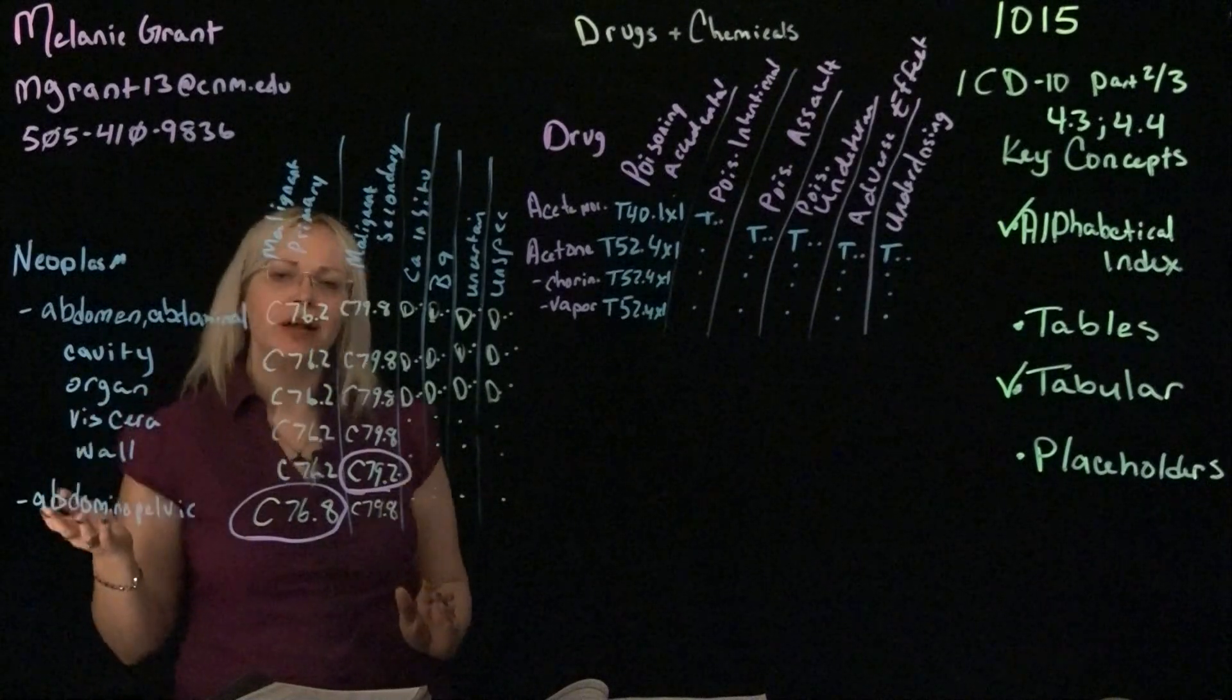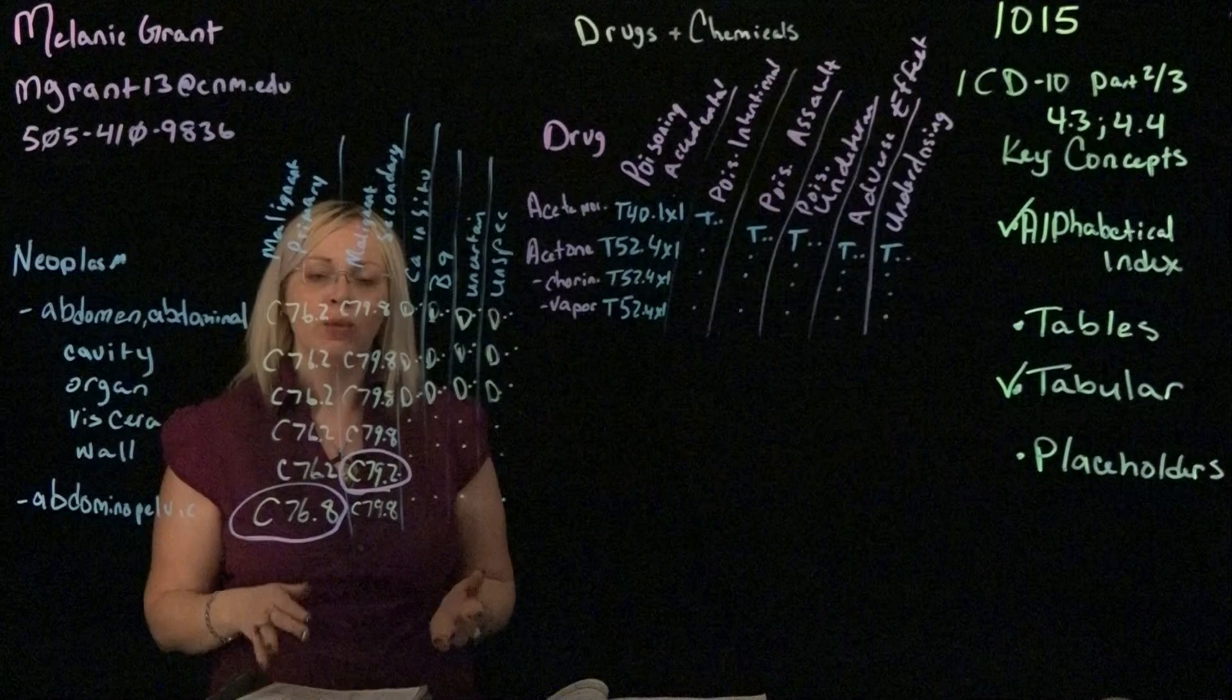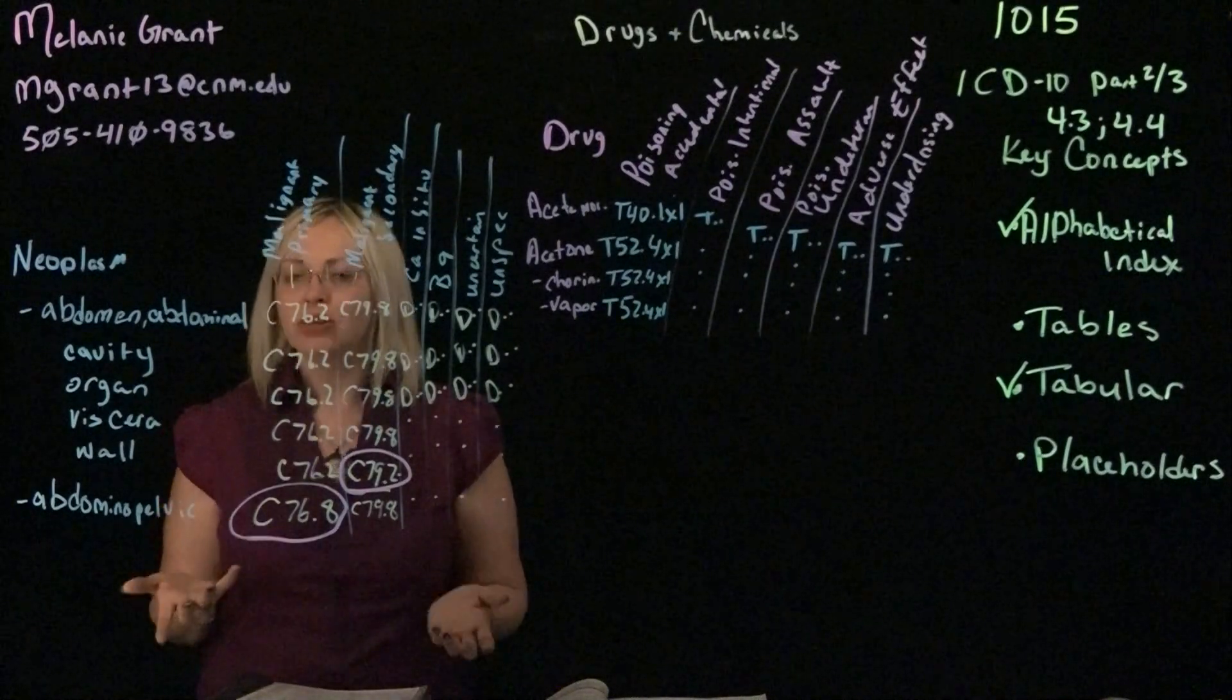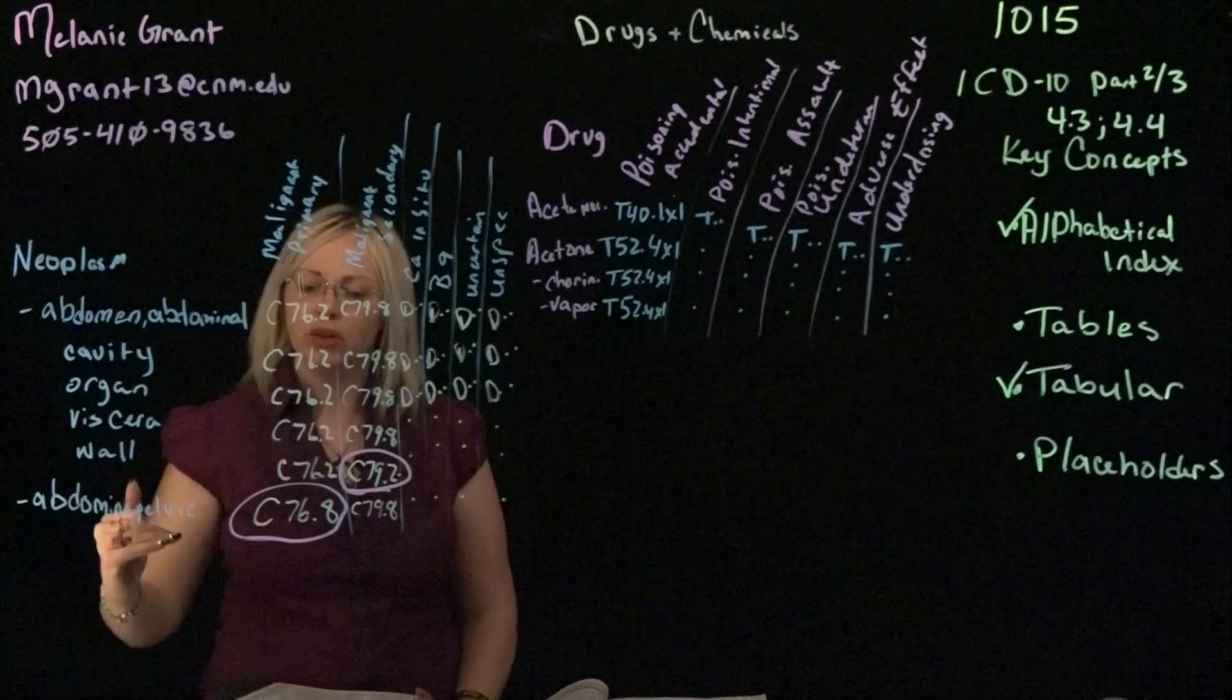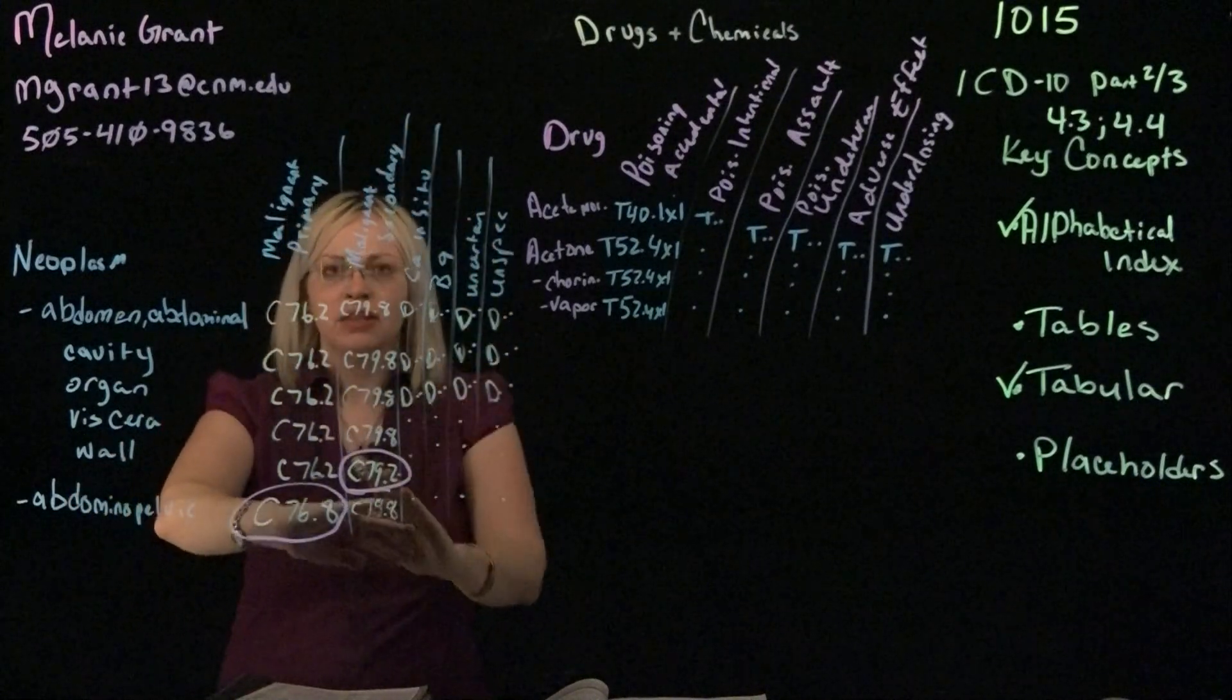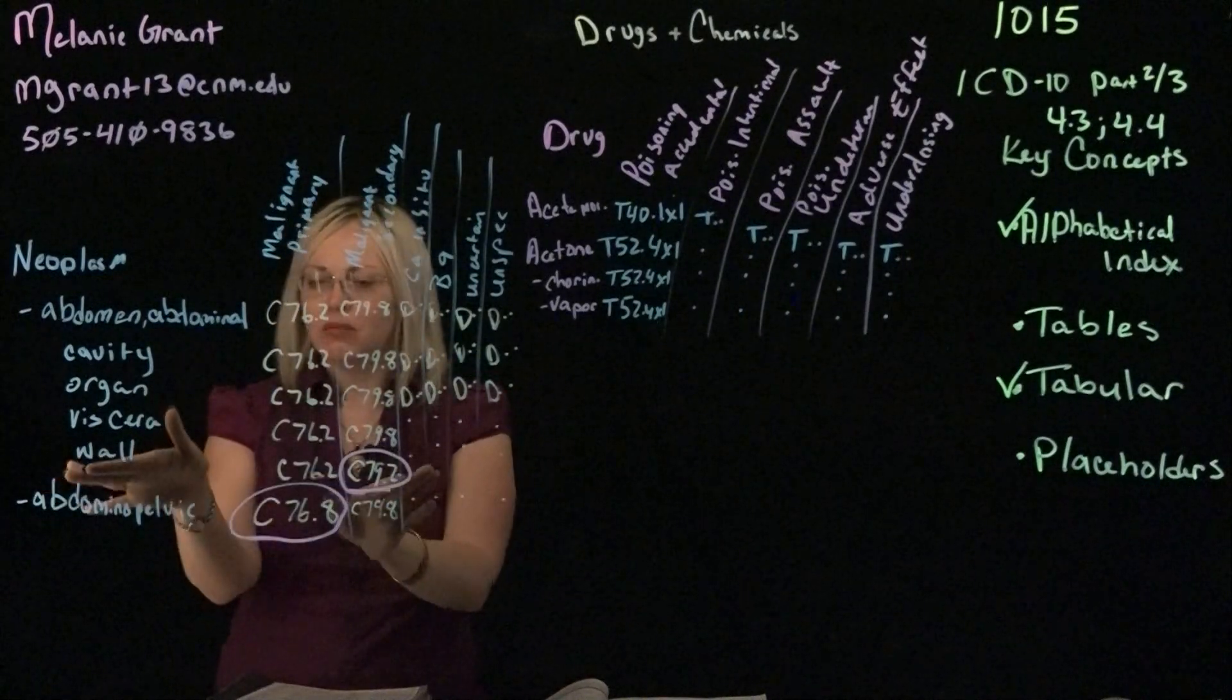This is pretty easy. The neoplasm table is one of the few that you can code directly from, although it's still recommended that you look up these codes in the tabular index when you're looking up a code. So if I was looking at the neoplasm table, I would find the alphabetical definition of what I'm looking for, and I would look and align it here, for example, malignant secondary, with the term that I have.